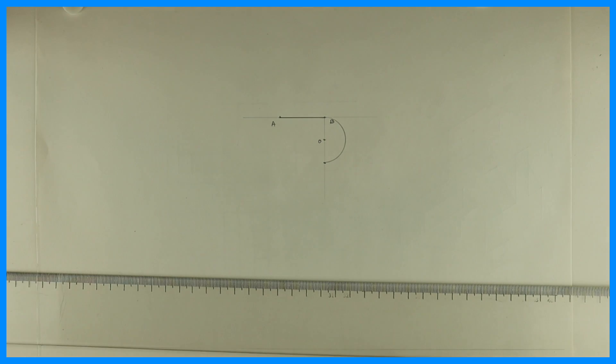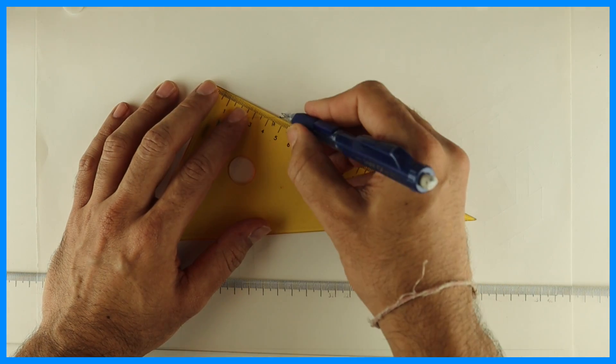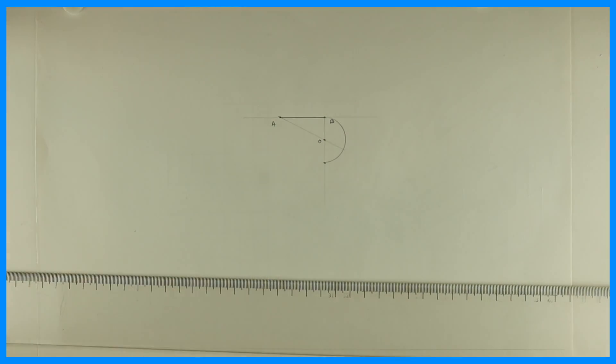So see, first you draw line AB, from B you draw vertical line, you mark the same distance and then you bisect and from O you draw semicircle, then you draw line from A to O.